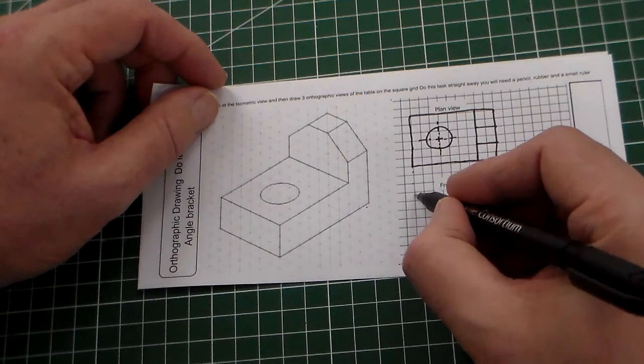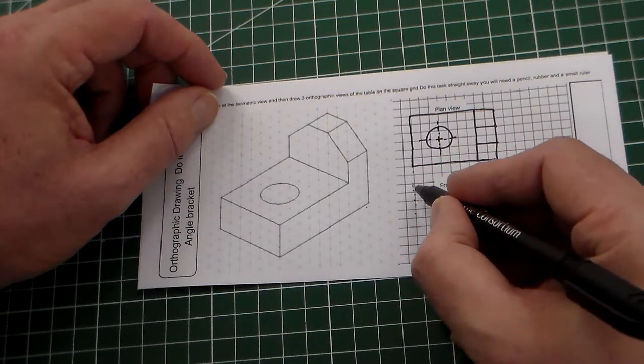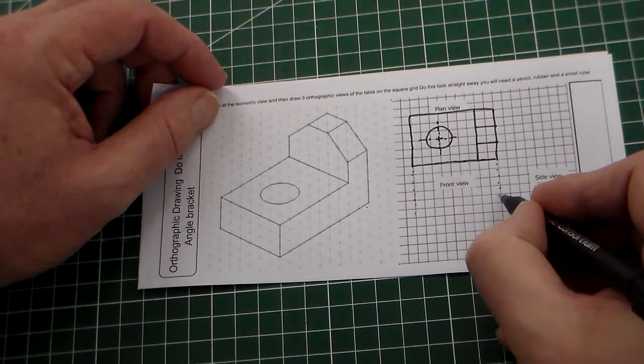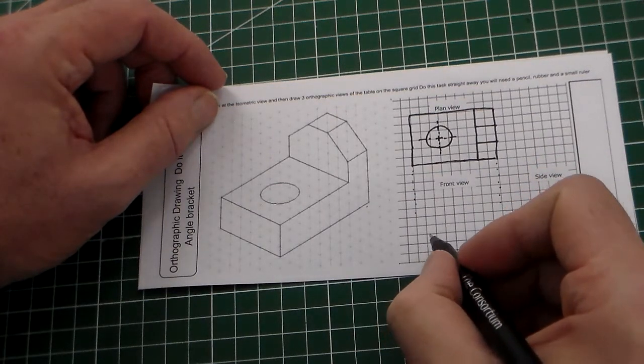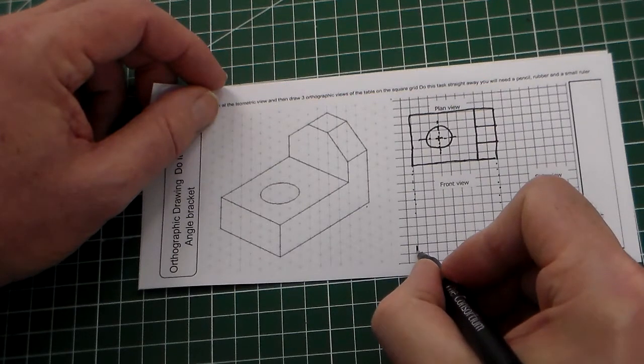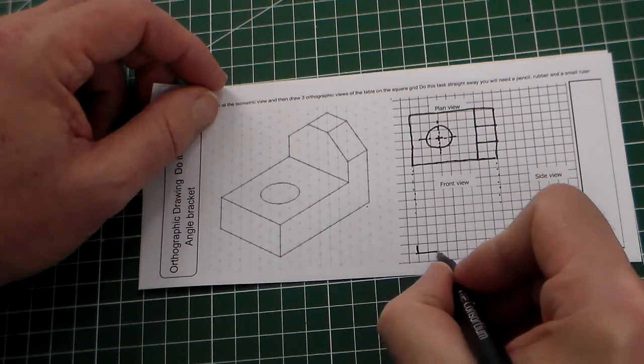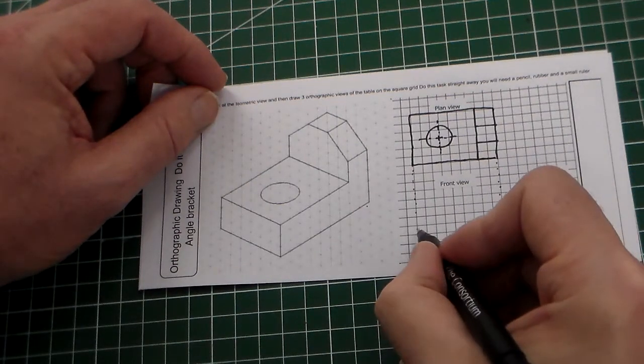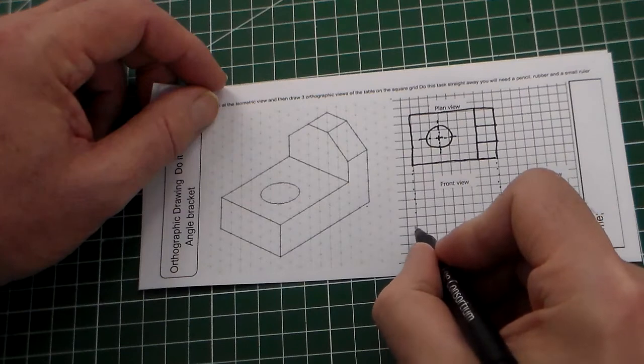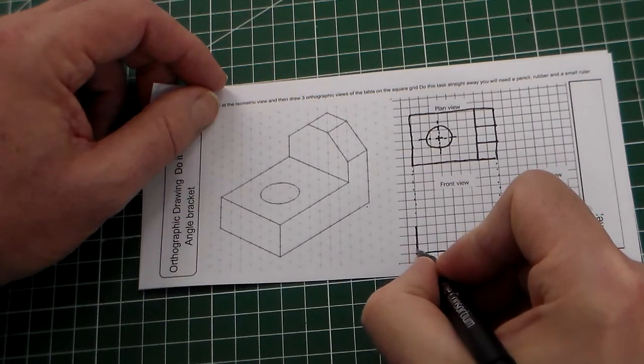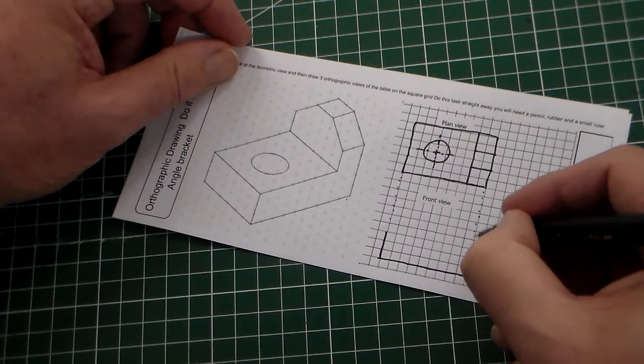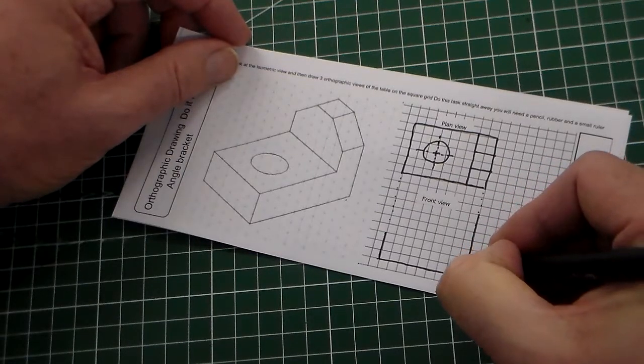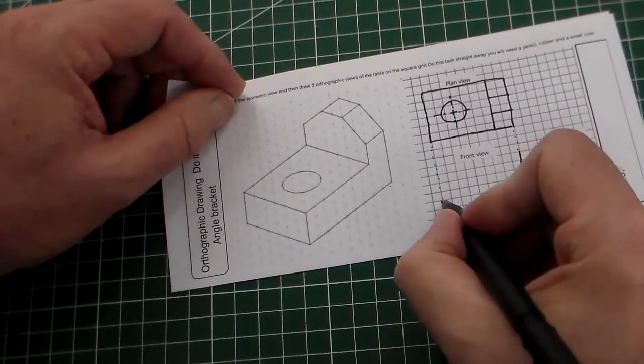Now from our front view, we can project these lines down, and you can do it with a very fine dotted line. Then we can add the base of our bracket, so there's our outline.